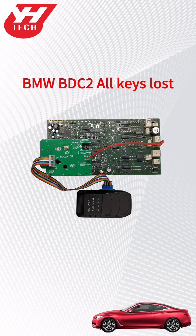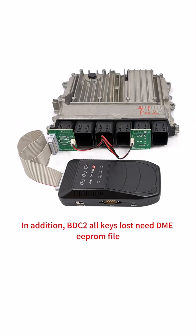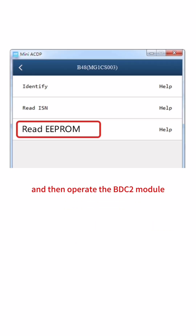This video shows you how to use ACDP to make BMW BDC2 all keys lost. Note: the BMW BDC2 hybrid car does not support all keys lost, and ACDP cannot clear the EMEISN. In addition, BDC2 all keys lost requires a DME EEPROM file. Please read the DME EEPROM data first, and then operate the BDC2 module.